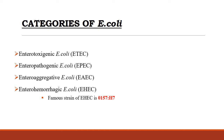The key virulence factor of EHEC is Shiga toxin, also known as verotoxin. The most famous member of hemorrhagic E. coli is the strain O157:H7, which can cause bloody diarrhea and fever. Fifth, enteroinvasive E. coli (EIEC) is a pathotype that causes invasive inflammatory colitis and occasionally dysentery, but in most cases it elicits watery diarrhea. It is an important cause of morbidity and mortality among children and adults in developing countries. EIEC strains are very similar to Shigella strains.